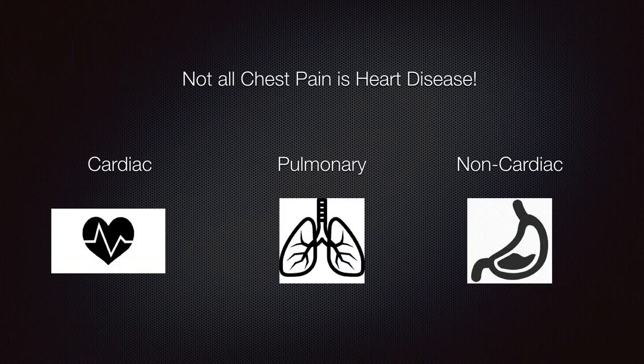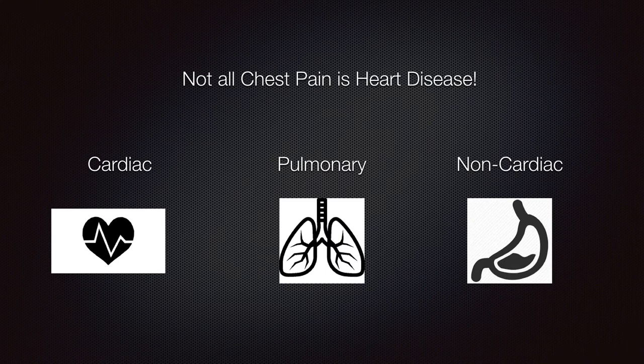Now that we've talked about the history, the physical, and the different lab tests for evaluating chest pain, let's talk about the differential diagnosis — the different underlying conditions that can result in chest pain. I've broken these down into three categories: cardiac, pulmonary, and non-cardiac. This framework needs to be understood while taking into account the cofactors mentioned previously.